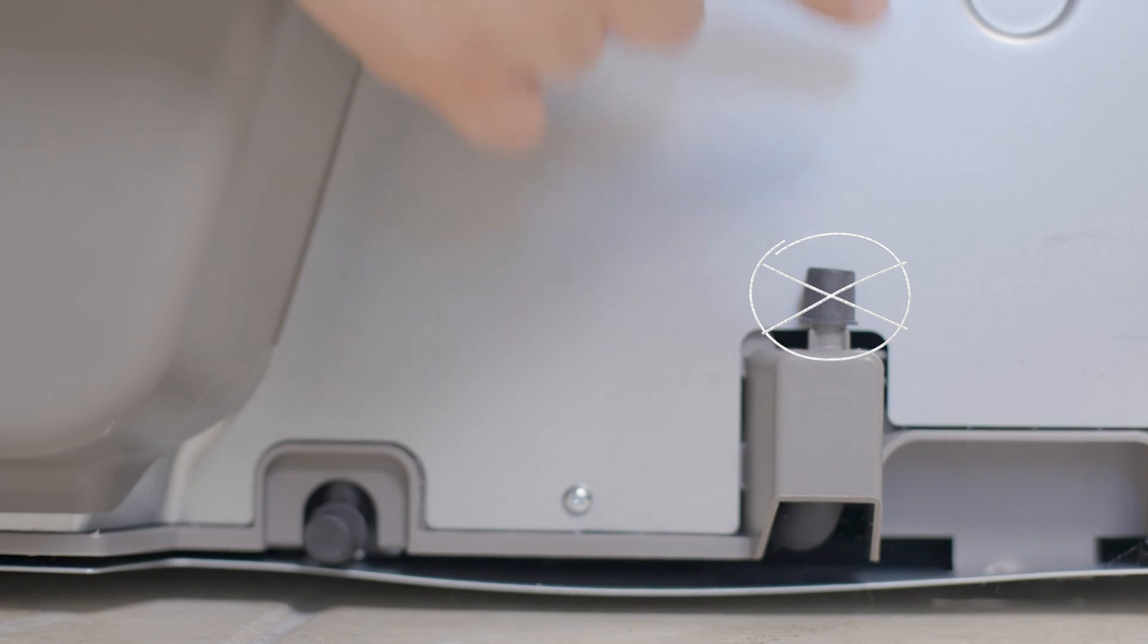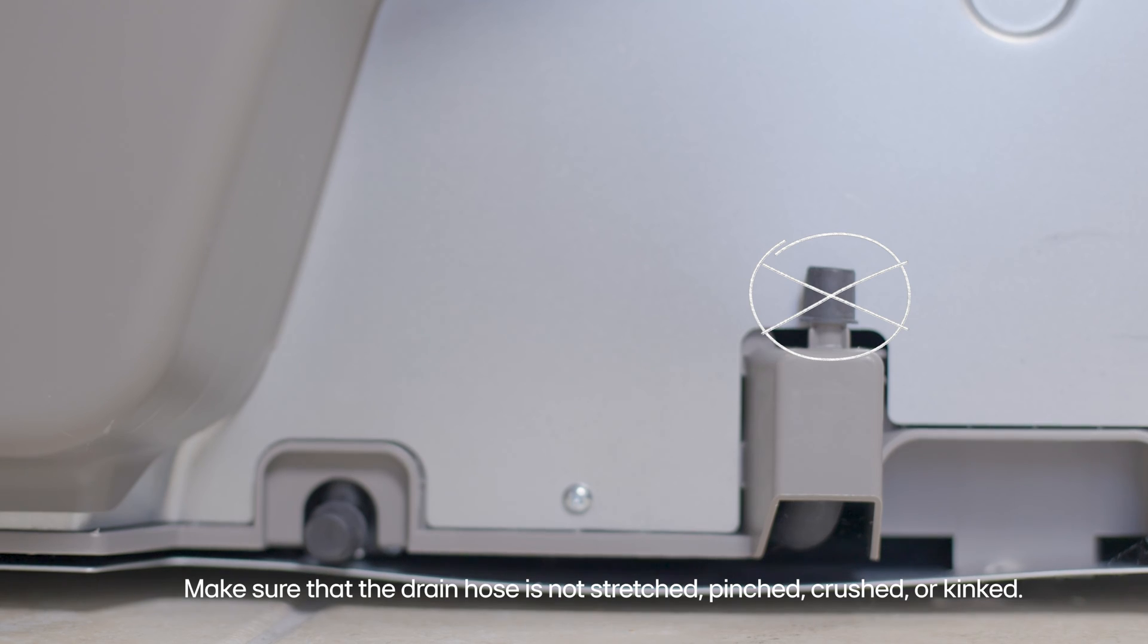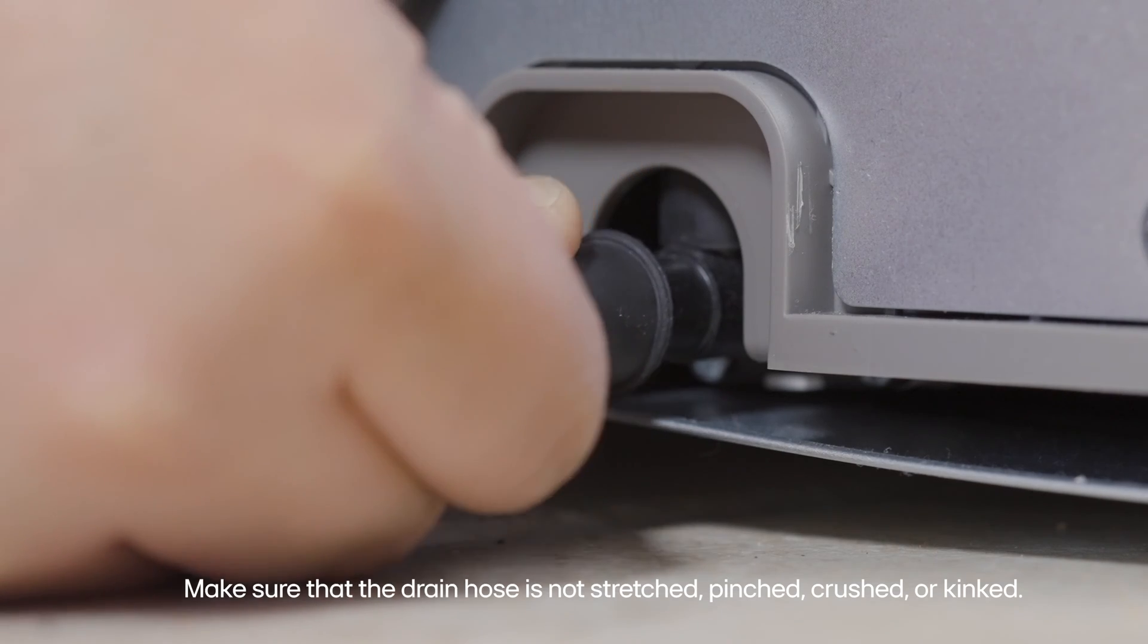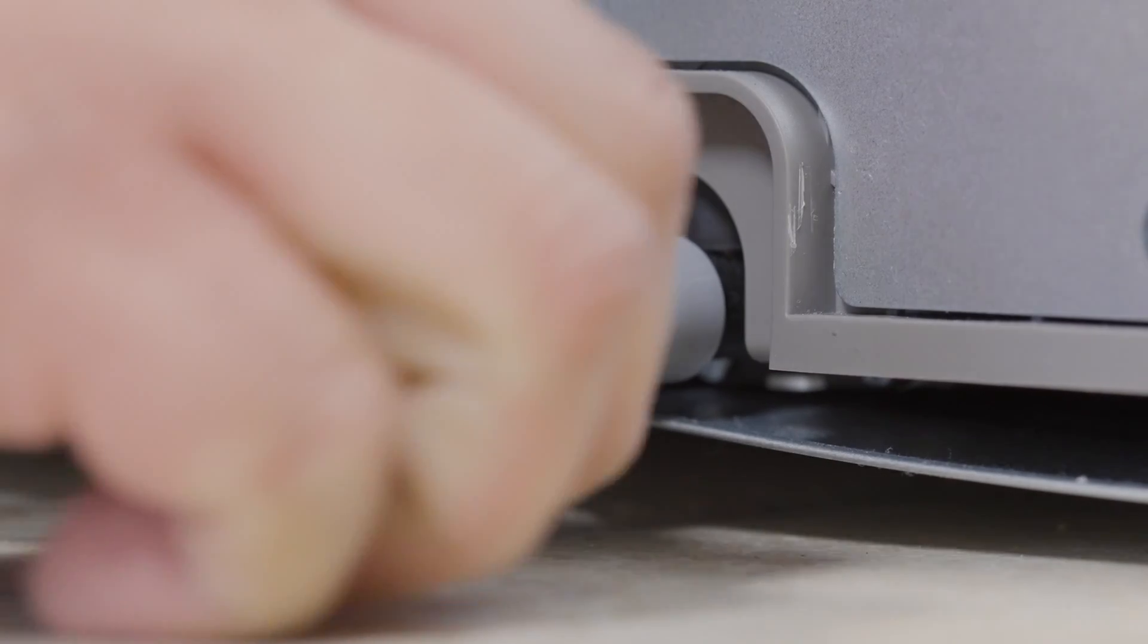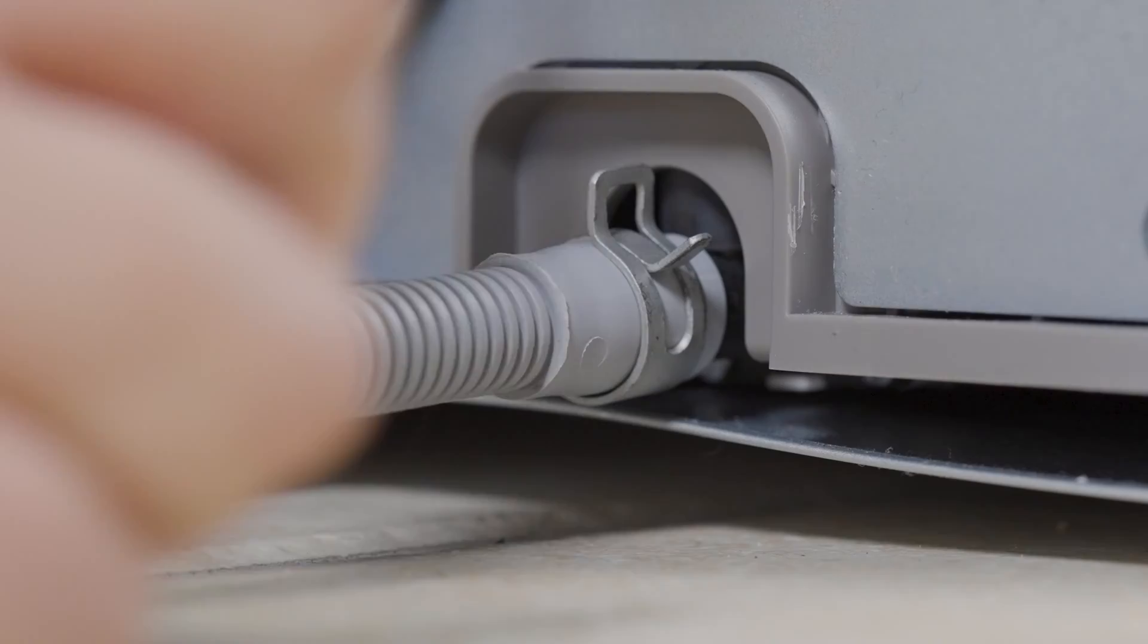Make sure to install it on the drain hose valve. Remove the cover and install the drain hose using the clamp. Secure it and make sure that it doesn't move.